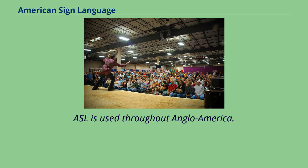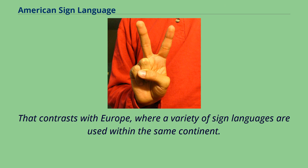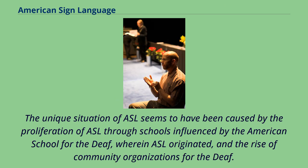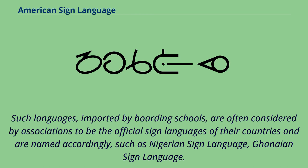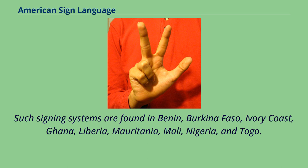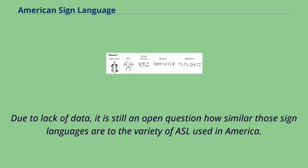ASL is used throughout Anglo-America, which contrasts with Europe, where a variety of sign languages are used within the same continent. Throughout West Africa, ASL-based sign languages are signed by educated Deaf adults, imported by boarding schools, and are often considered the official sign languages of their countries, such as Nigerian Sign Language and Ghanaian Sign Language. Such signing systems are found in Benin, Burkina Faso, Ivory Coast, Ghana, Liberia, Mauritania, Mali, Nigeria, and Togo. Due to lack of data, it is still an open question how similar those sign languages are to the variety of ASL used in America.